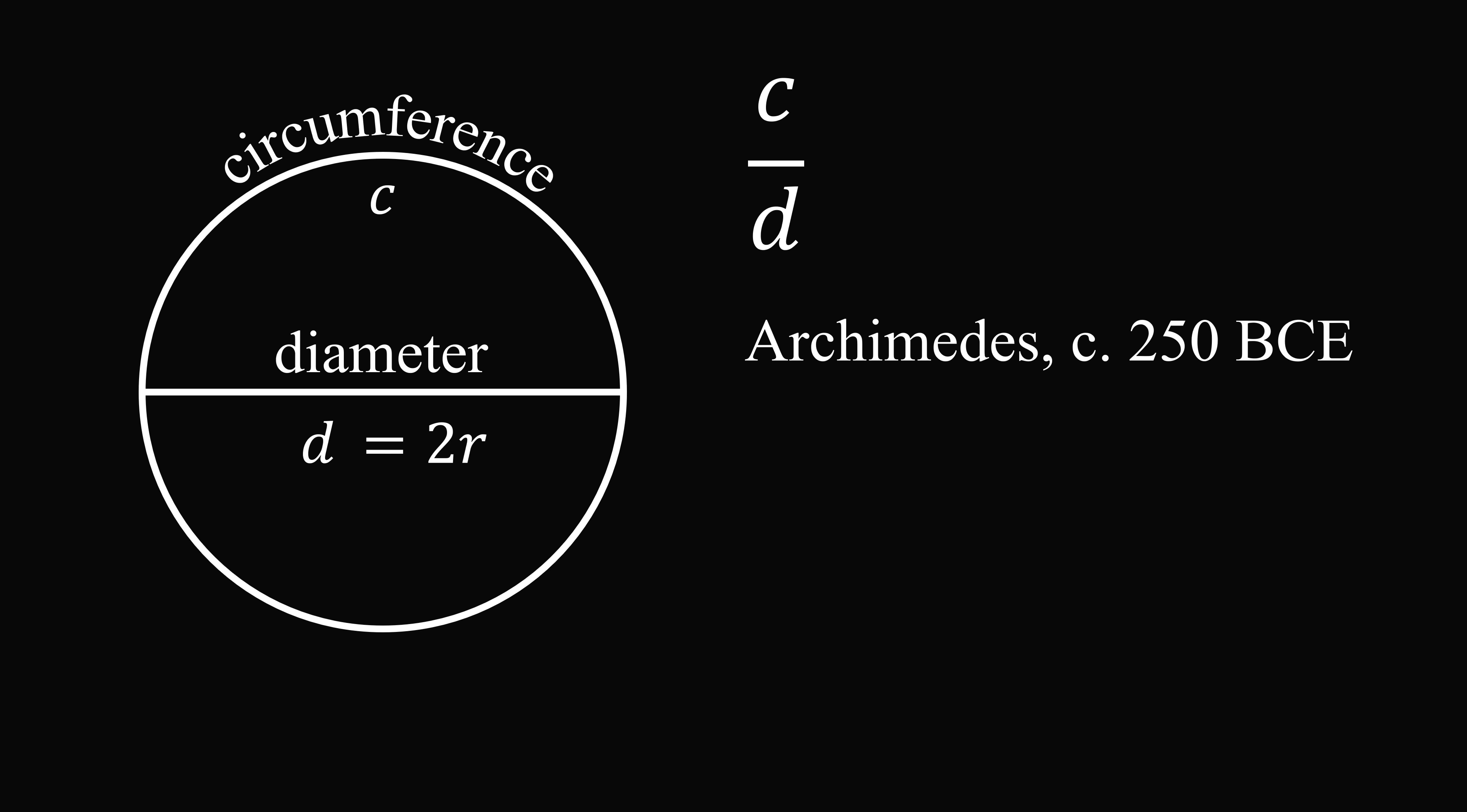So to get started, pi is a concept that relates the circumference of a circle C to its diameter D. It is specifically the ratio of the circumference to the diameter and it's constant for all circles. One of the earliest estimates of pi comes from Archimedes, circa 250 BCE.